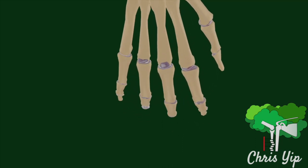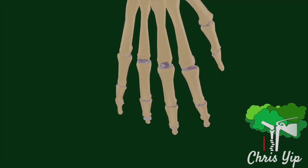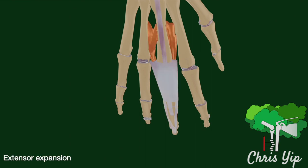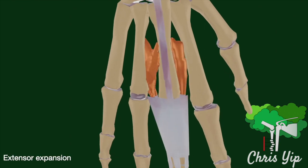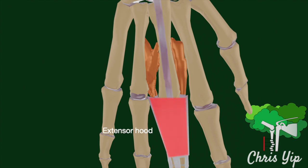The extension of the digits relies on a complex meshwork of tendons. This group of structures are collectively known as the extensor expansion. The first component originates from the tendon of the extensor digitorum muscle, which runs along the dorsal surface of the digit. Just before it reaches the MCPJ, the tendon joins a flat structure known as the extensor hood.